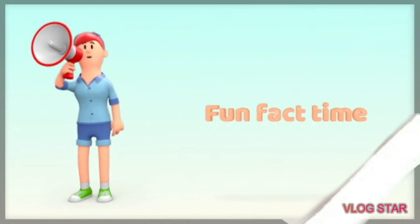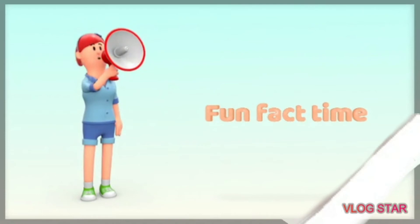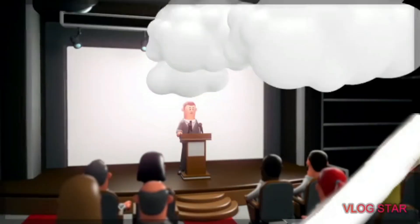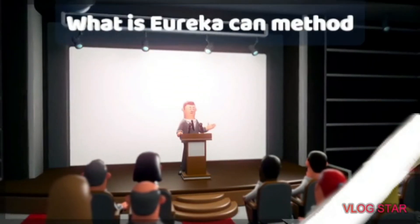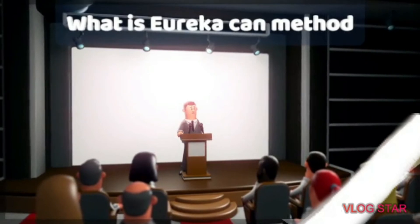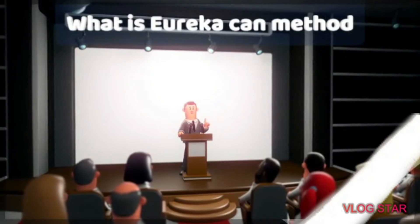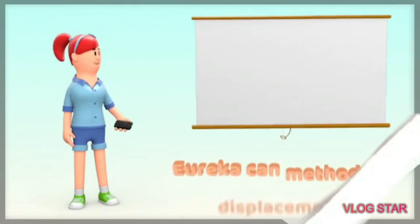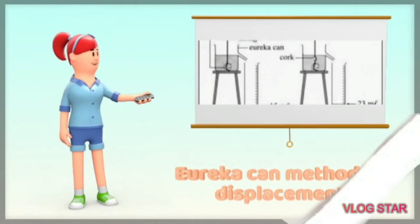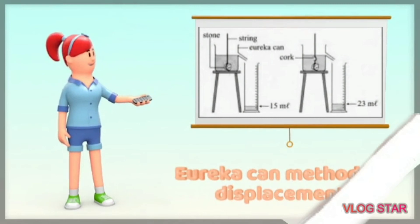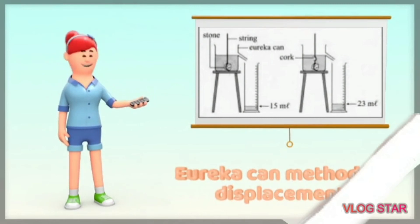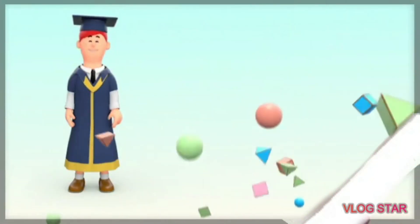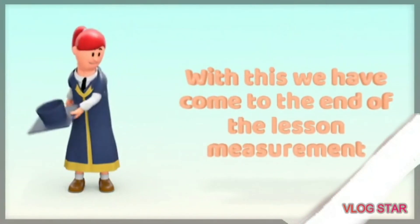Fun fact time! What is the Eureka Can method? Here is the image of the Eureka Can method of displacement. When we fill a jar with water and place an object in it, the volume of the object is shown by the amount of water displaced. With this, we have come to the end of the lesson on Measurement.